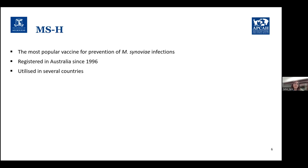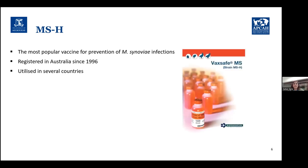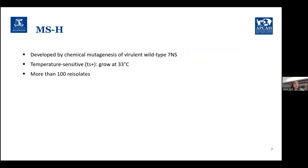MSH is the most popular vaccine for prevention of Mycoplasma synoviae infection. It has been registered in Australia since 1996 and is utilized in several countries around the world. MSH is a strain developed by chemical mutagenesis of the virulent wild-type Mycoplasma synoviae 7NS in Australia. It is a temperature-sensitive strain, meaning MSH cannot grow at 39°C — the body temperature of the bird — but will grow at around 33°C. It colonizes the upper respiratory system and causes a mild infection that gives the bird immunity against Mycoplasma synoviae.